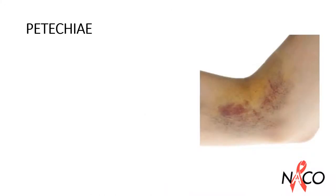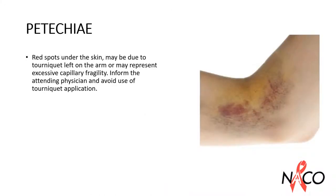Red spots under the skin (petechiae) may be due to the tourniquet left on the arm, or may represent excessive capillary fragility in some patients. Inform the attending physician and avoid or limit use of tourniquet application in such patients.